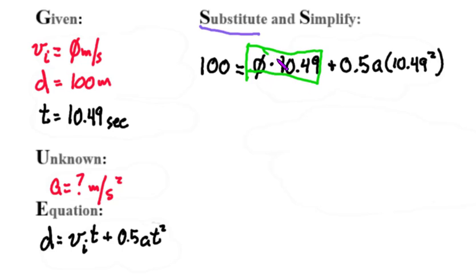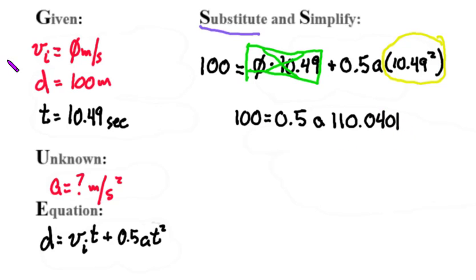And then if I do the math in the yellow circle, this is what I get: 100 equals 0.5 times acceleration times 110.0401. Now if I do the math in the blue circle...